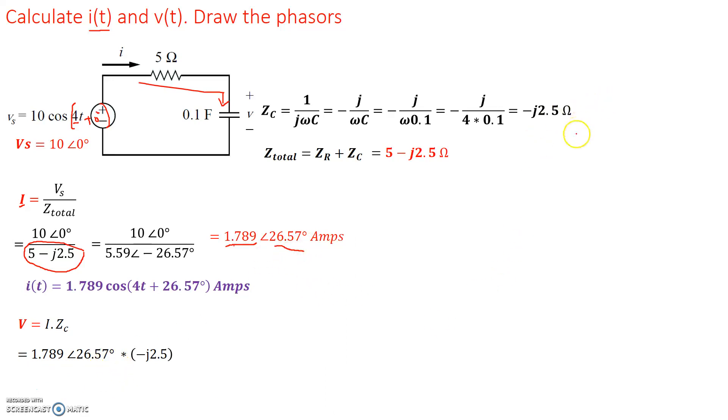Now -j2.5 ohms is same as saying 2.5 with a magnitude of -90 degrees. Because if you look at the imaginary real axis right here, so this is the j domain, that's the imaginary axis, and here's the real axis.